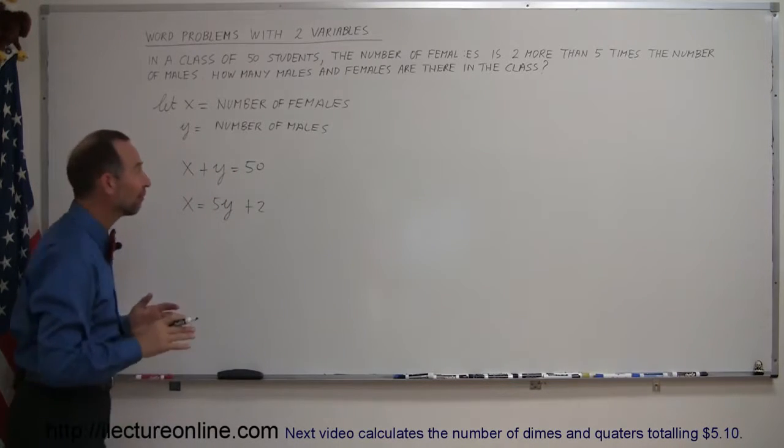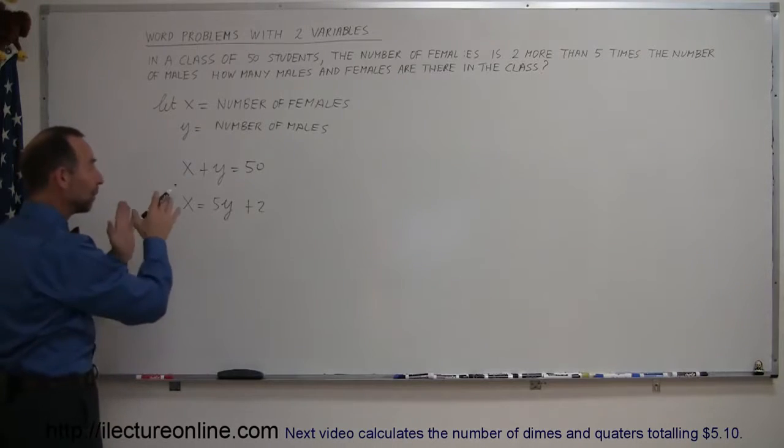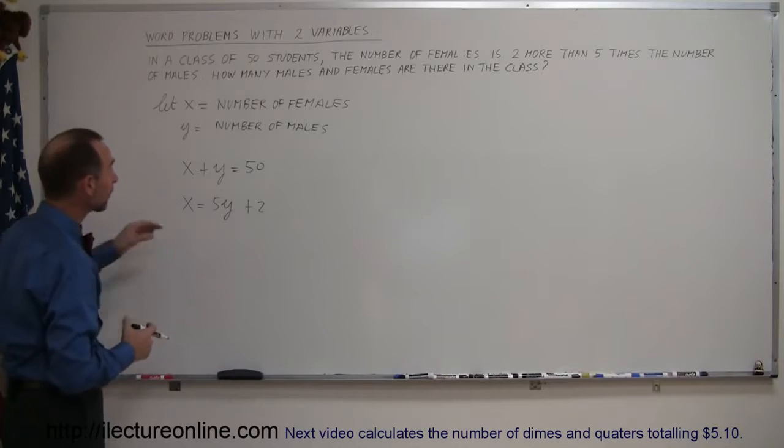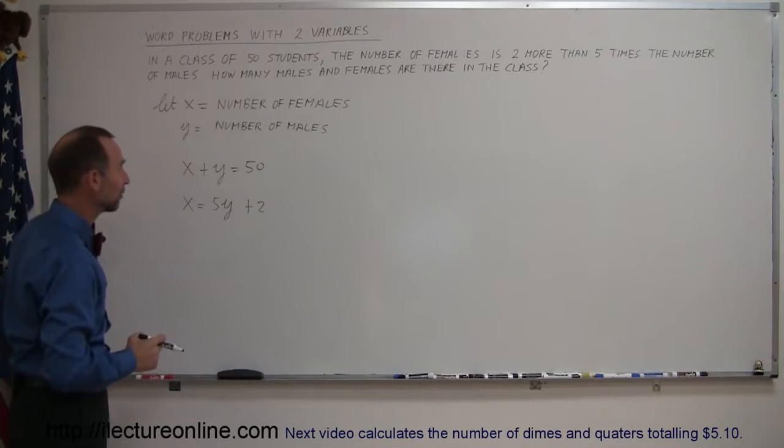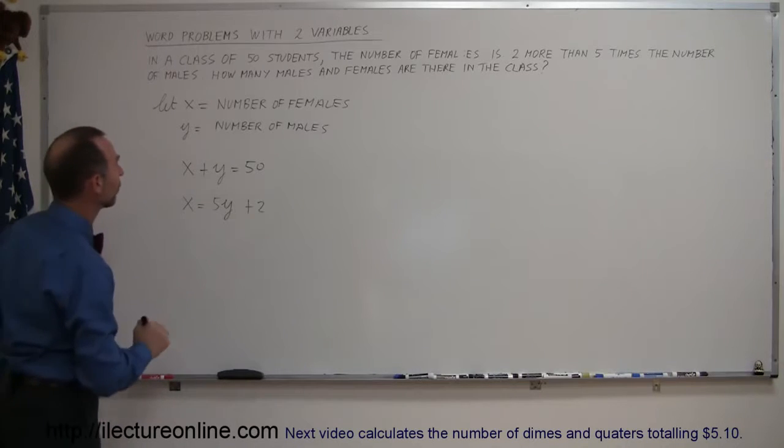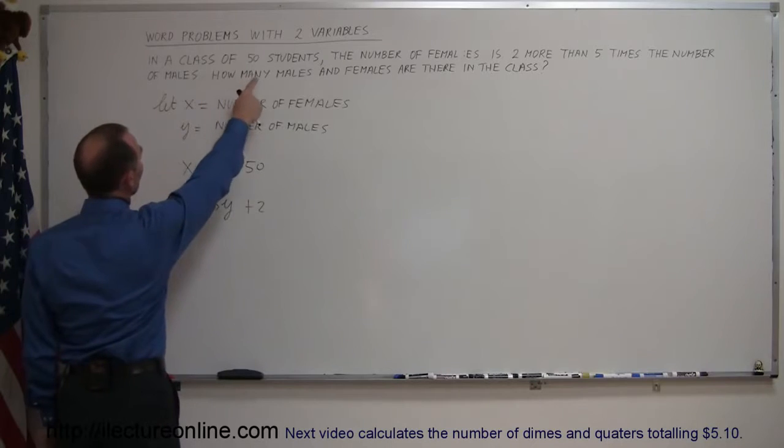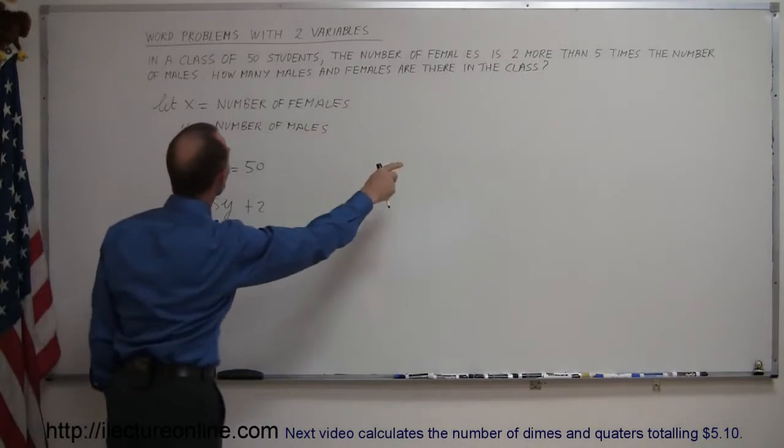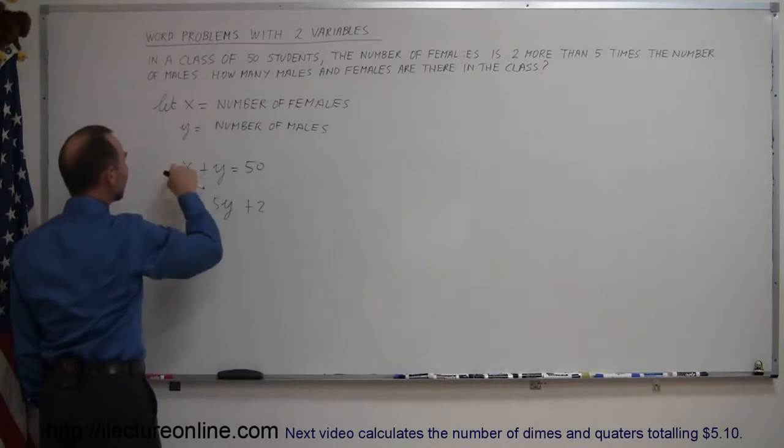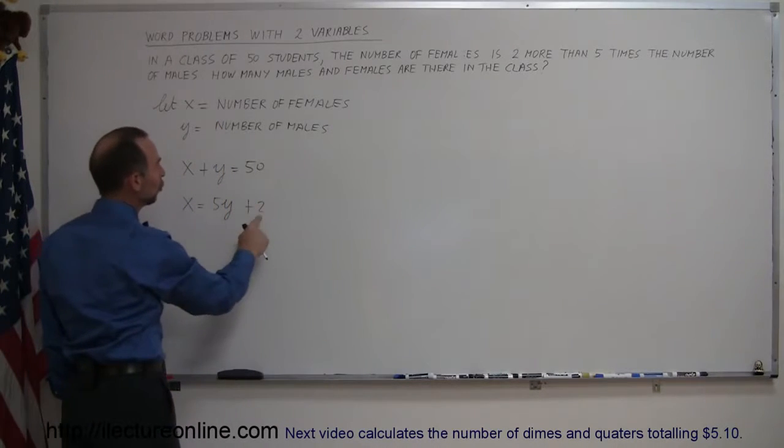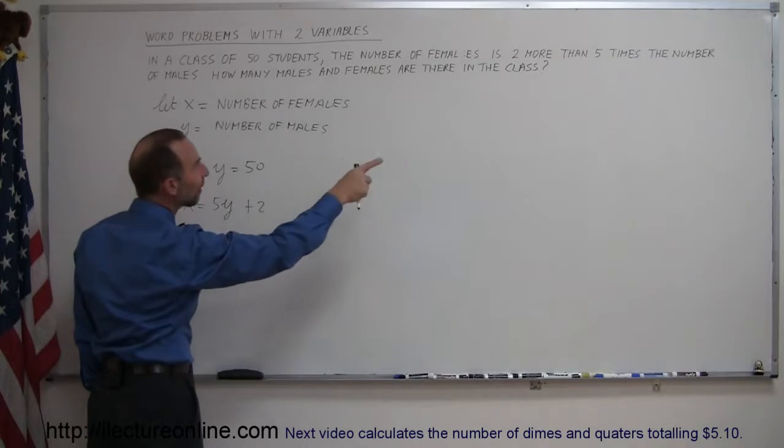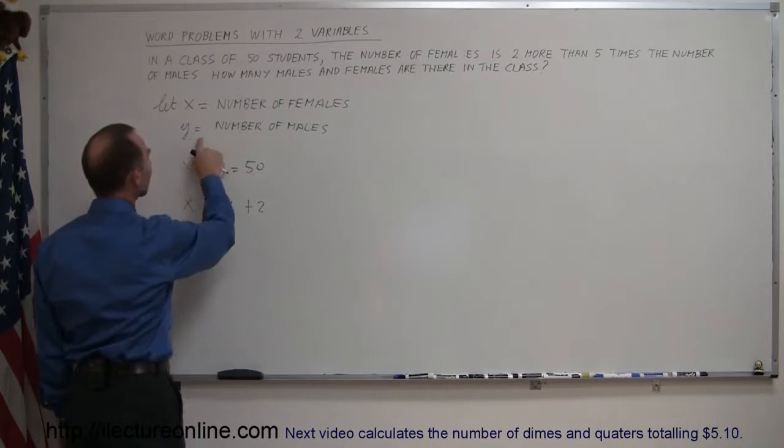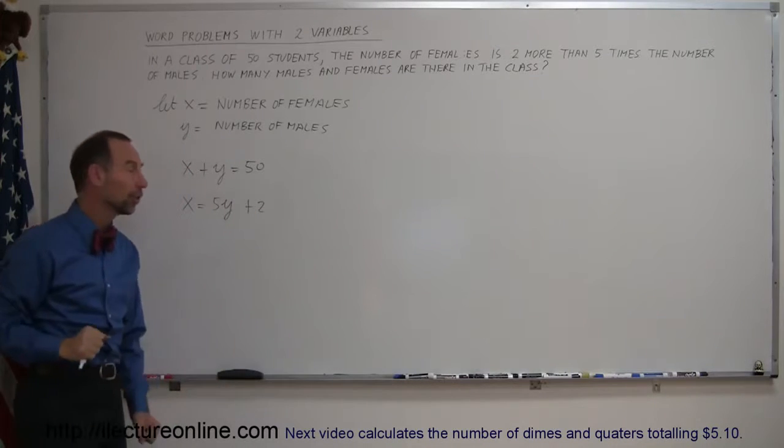Notice if I had not very well defined my x and y, I probably would not have caught my mistake, and I would not have gotten the problem right. So that shows how important it is to define your variables carefully. So let's recap quickly. In a class of 50 students, so x plus y must be 50, and the number of females, which is defined by x, is equal to two more, plus two, than five times the number of males, so plus two added to five times y, where y is the number of males. And now we're good to go.